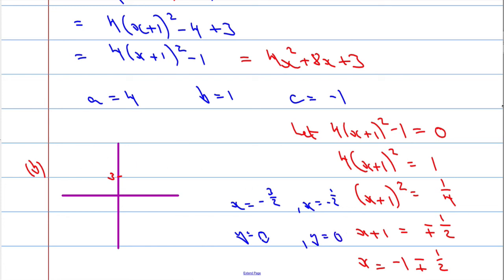So in fact, it's going to cut the axis at negative 3 over 2 and negative a half. Negative a half. And another thing we might be able to work out is, in fact, because we completed the square, when x is negative 1, y is negative 1. So we actually know the minimum, which is going to be round about here.